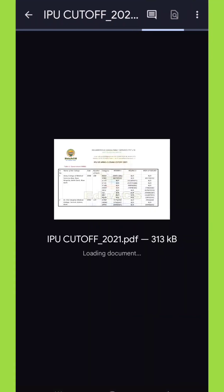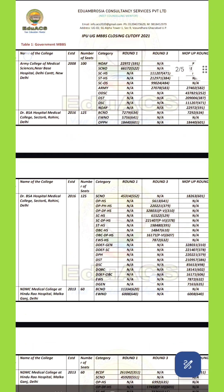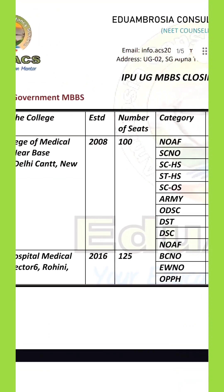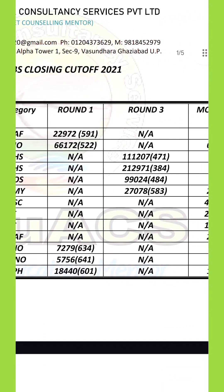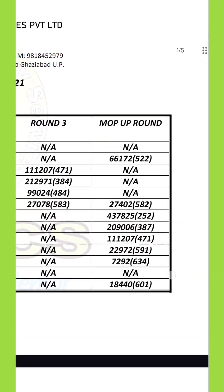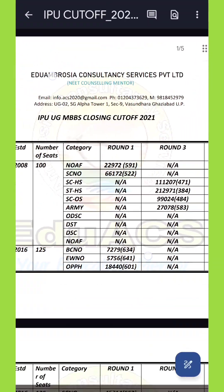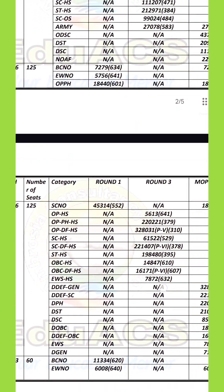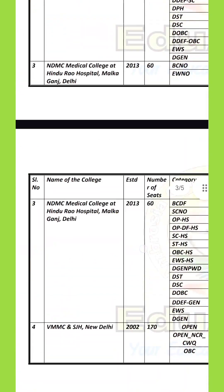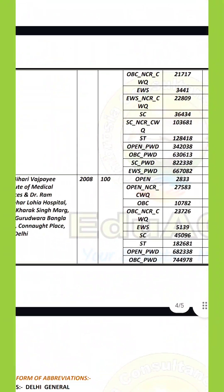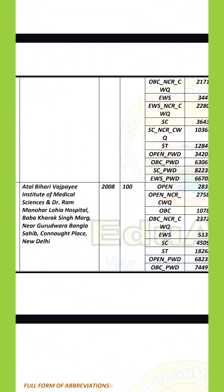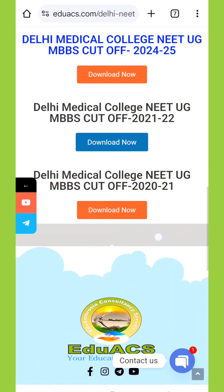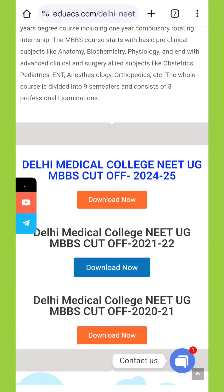It's going to save a lot of your time. Yes, it is a consultancy website and they do offer paid counseling, but honestly you don't have to book anything. Just use the free data to get a clear idea of cutoffs, ranks, and college options. If you found this helpful, don't forget to follow me for more such amazing tips.